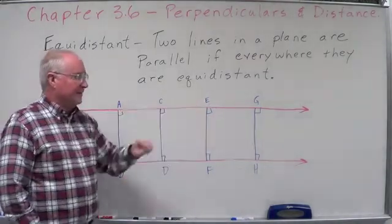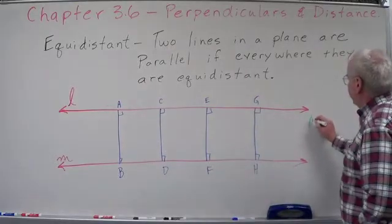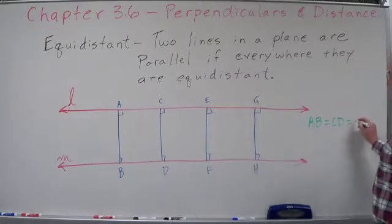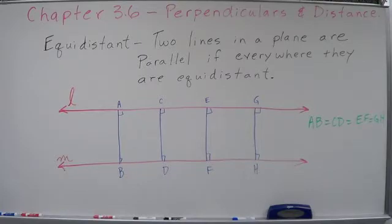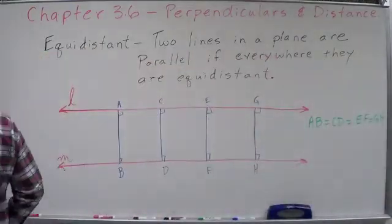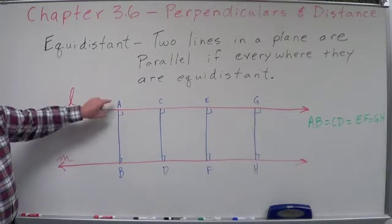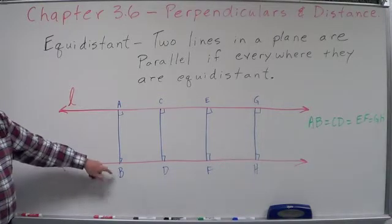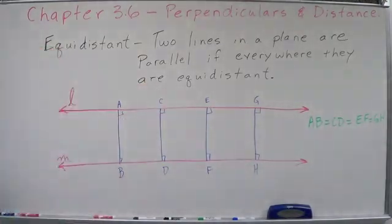From one point to another — and if all of those distances are the same, in other words if AB equals CD equals EF equals GH, and that continues on, then those two lines are parallel because they are equal distance apart, which means they will never cross. We're talking about the perpendicular distance between the two lines — a point on one line to the other line, and vice versa. So if everywhere they are equal distance, then those two lines are parallel.